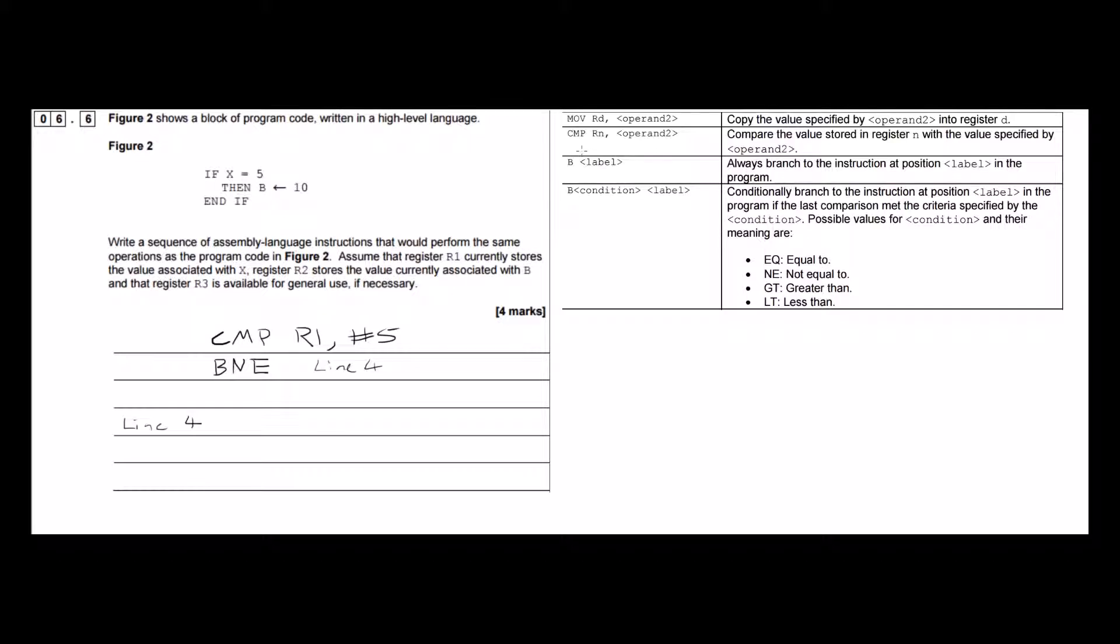And for that we need the move instruction. So this instruction copies the value specified by this operand to the register specified here. So we want to copy the decimal value 10 into our register, register 2, which is associated with B.